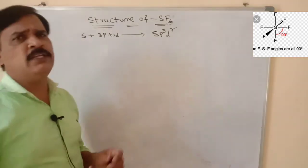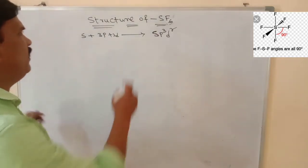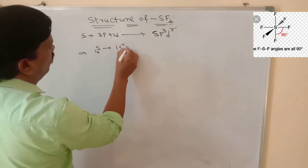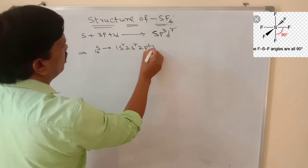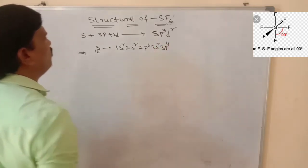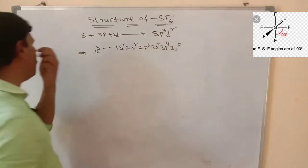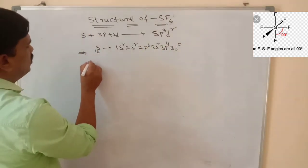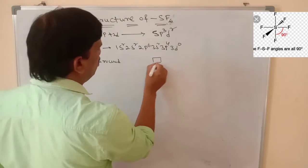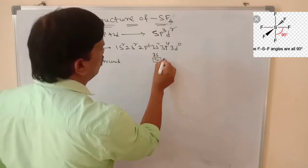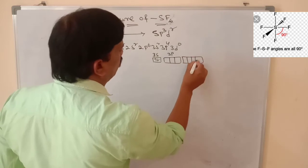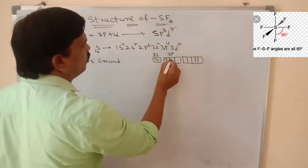Sulfur hexafluoride undergoes sp3d2 hybridization. Sulfur has atomic number 16 and its electronic configuration is 1s2, 2s2, 2p6, 3s2, 3p4, with 3d0. In the ground state, 3s has 2 electrons and 3p has 4 electrons — each orbital gives 1 electron then pairing starts. The 3d orbital is vacant.